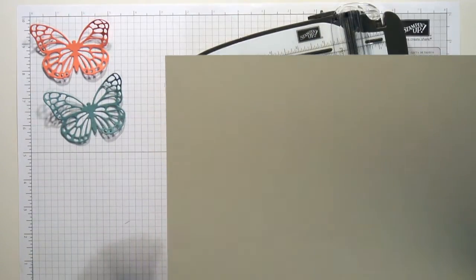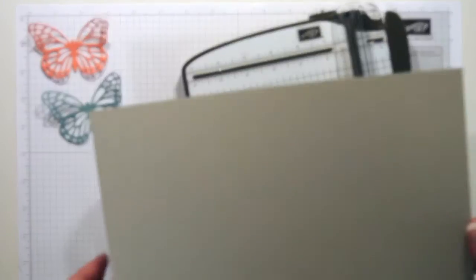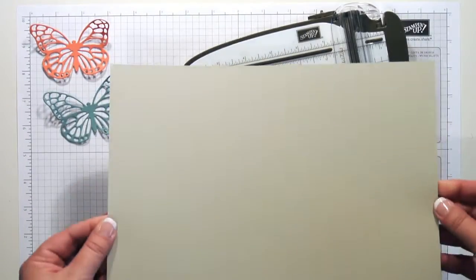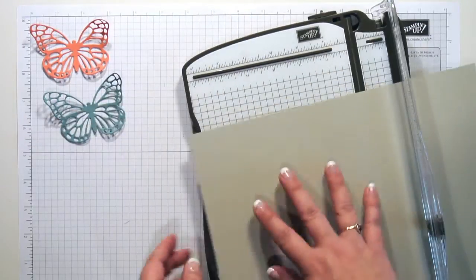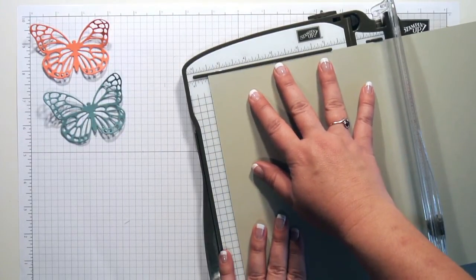I've got my piece of paper here for my card. This is Sahara Sand cardstock, it's an 8.5 by 11 inch piece of cardstock, and I want to cut it in half at 5.5 inches.